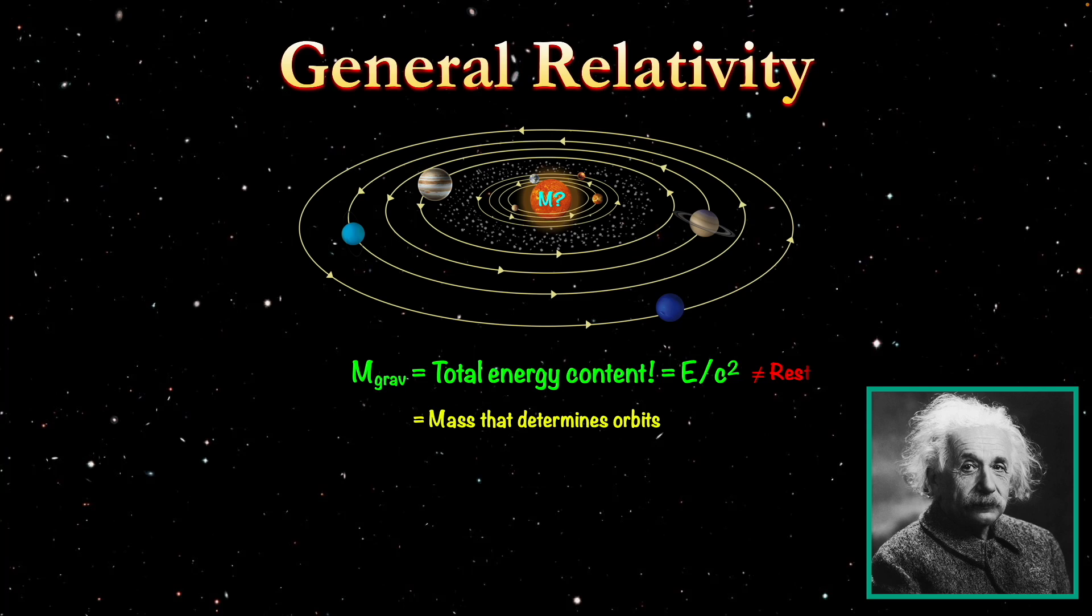And this is not equal to the rest mass. In fact, the difference between the rest mass and the total energy, or the gravitational mass, is defined as the binding energy of the star, meaning the difference between those two masses is the amount of energy you'd have to put into the star to disassociate it or blow it up.